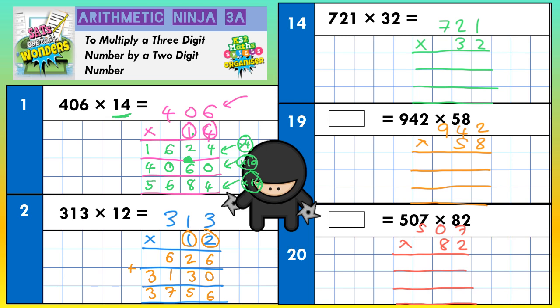For the next one, we've got 721 times 32. The top line is for the 2, the middle line is for this 3 which means 30, and the bottom line for adding everything together. On the top line: 2 ones, 2 twos, 2 sevens in that order. 2 ones are 2, 2 twos are 4, 2 sevens are 14.